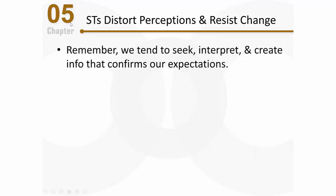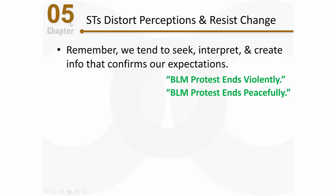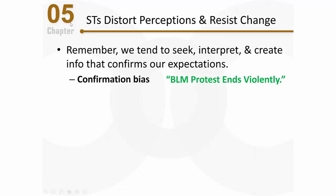You might recall that we tend to seek, interpret, and create information that confirms our expectations. Let's say you have a stereotype that black men are violent, and you encounter two different headlines: one says a Black Lives Matter protest ended violently, and the other says the protest ended peacefully. You're much more likely to seek out the story about violence because you're seeking information that confirms your understanding of the world. That's what confirmation bias is all about.